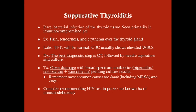Suppurative thyroiditis is rare because the thyroid has a very rich lymphovascular supply, making it uncommon for bacteria to proliferate there. However, immunocompromised patients can get thyroid infections, typically in the form of an abscess. Symptoms include pain, tenderness, and erythema over the thyroid gland—similar to an infected thyroglossal duct cyst, but in an immunocompromised adult. Thyroid function tests are normal because the infection does not affect thyroid function.